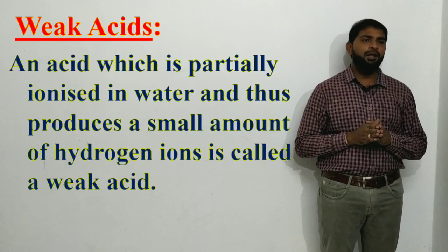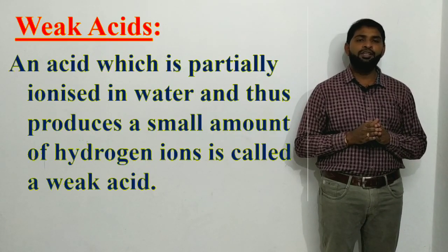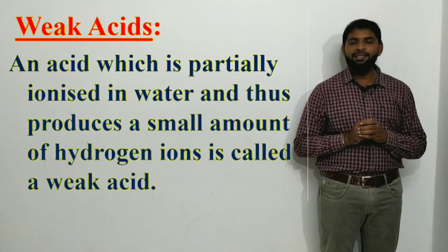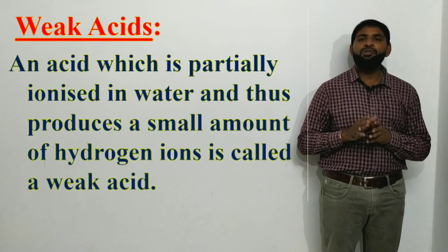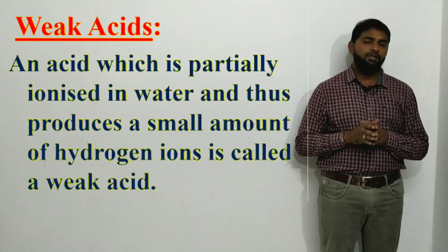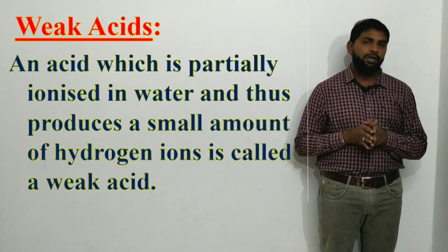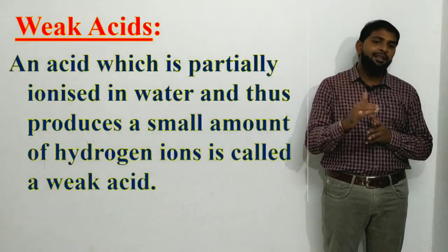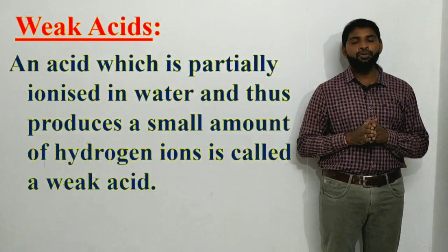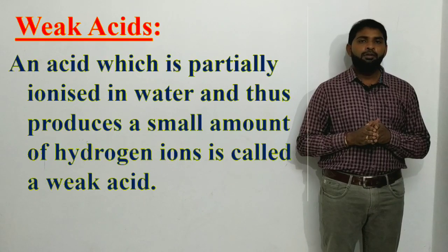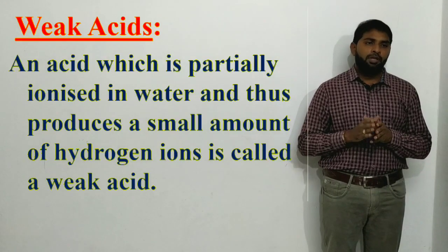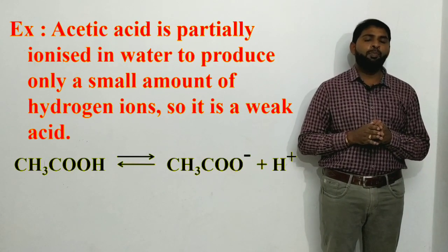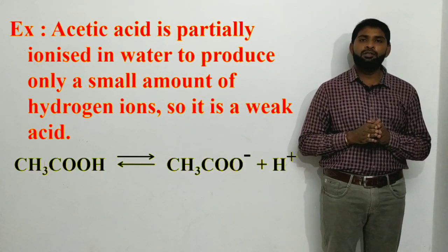Coming to weak acids — a weak acid is an acid which is partially ionized in water and thus produces a small amount of hydrogen ions. 'Partially ionized' means it does not undergo 100% ionization; if it undergoes less than 100% ionization, it is called a weak acid.